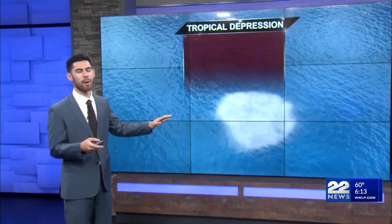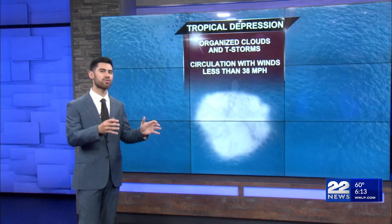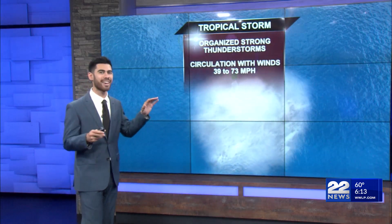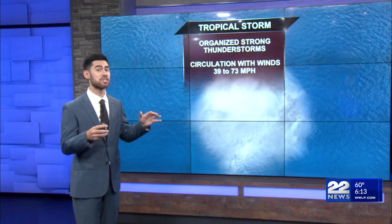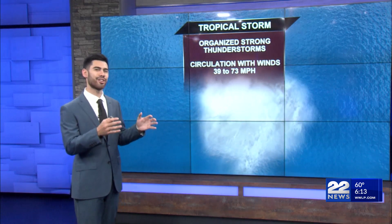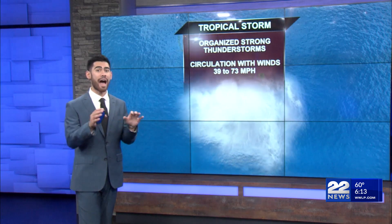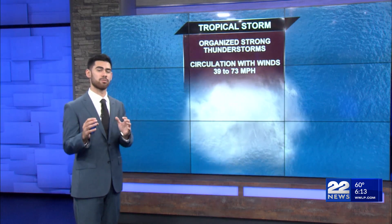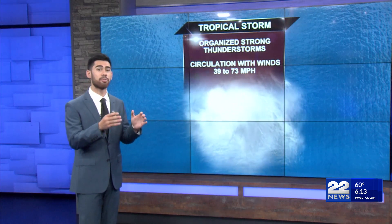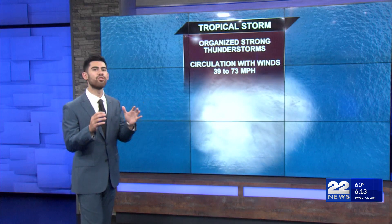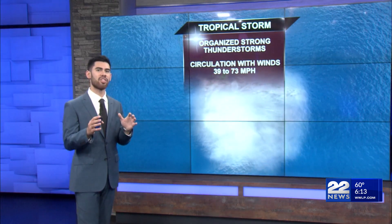A tropical depression forms when thunderstorms and clouds circulate together with circulation speeds under 39 miles an hour. Once it gets above that, we get a tropical storm — the same thing, just higher circulation speeds. Circulation speed is not to be confused with how fast the storm as a whole is moving, which is usually anywhere between 5 to 25 miles an hour.